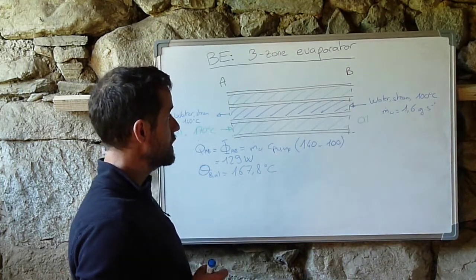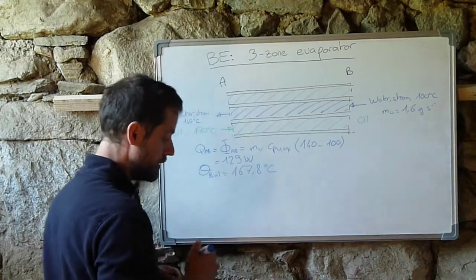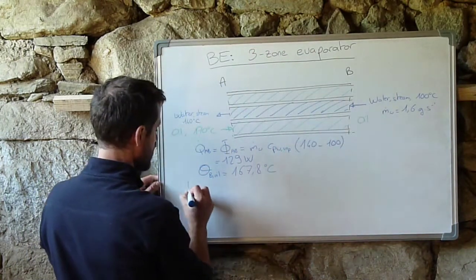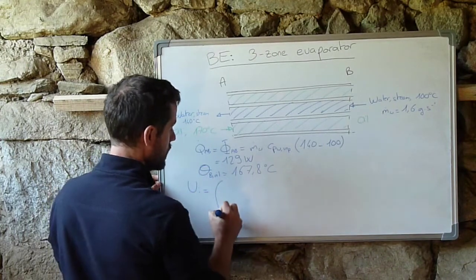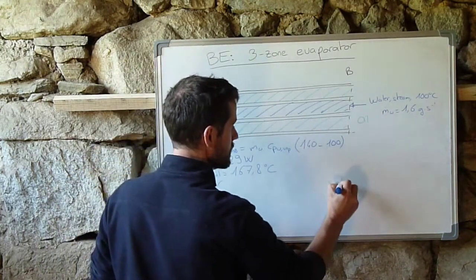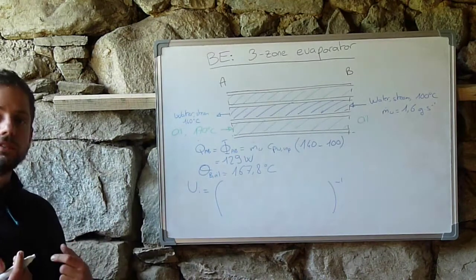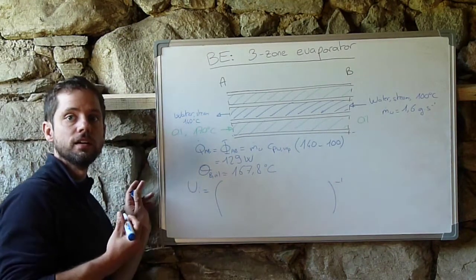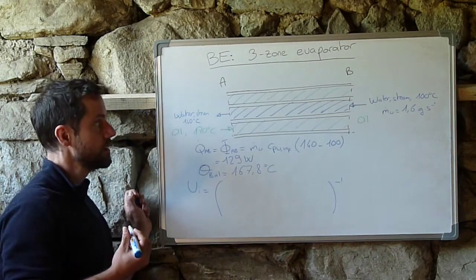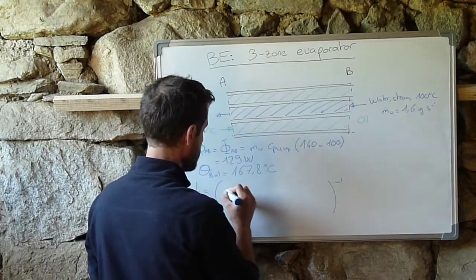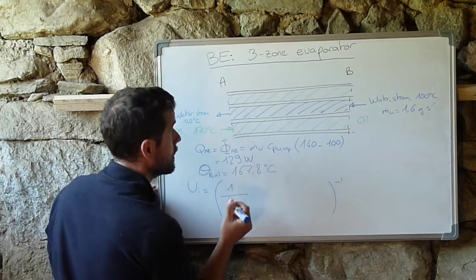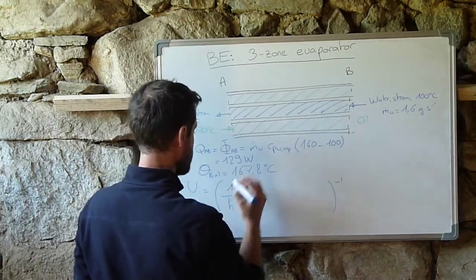So you can choose to do it either at the outer surface or inner surface of the inner tube. So if we do it at the inner section, then U E would be equal to the inverse of the sum of three terms. One that corresponds to convective heat transfer at the inner part, so 1 over H at the water side.